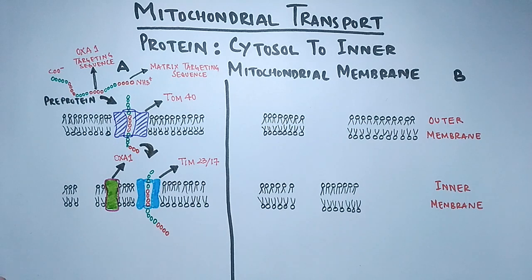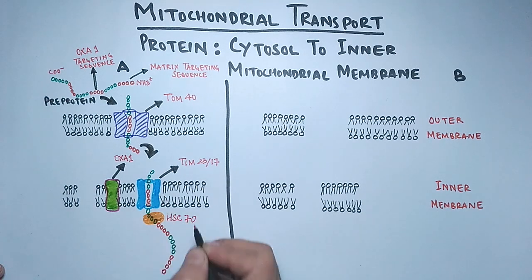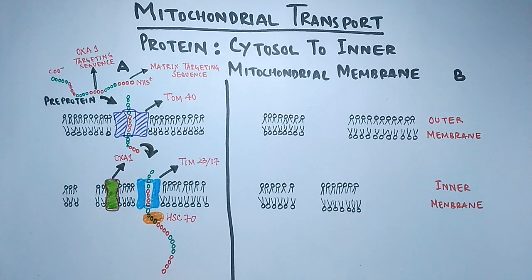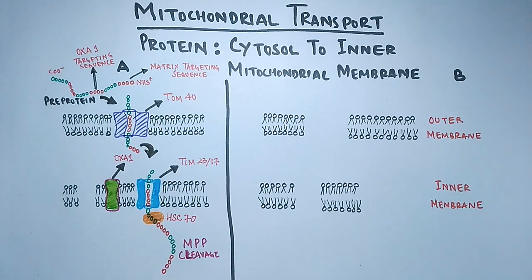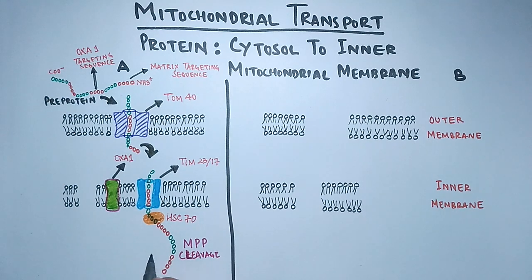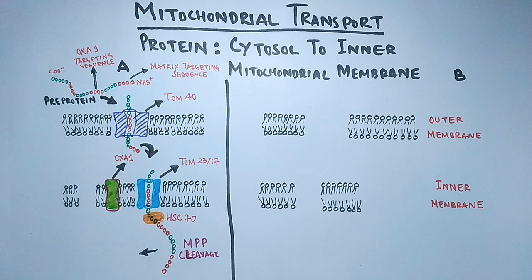When proteins get through the TIM complex — the translocon of the inner membrane — the matrix HSC70 comes in and pulls the protein into the matrix. Here in the matrix, MPP cleavage occurs, which is mediated by matrix processing protease. Matrix HSC70 has the property to pull in the protein, whereas cytosolic HSC70 keeps the protein in an unfolded state.